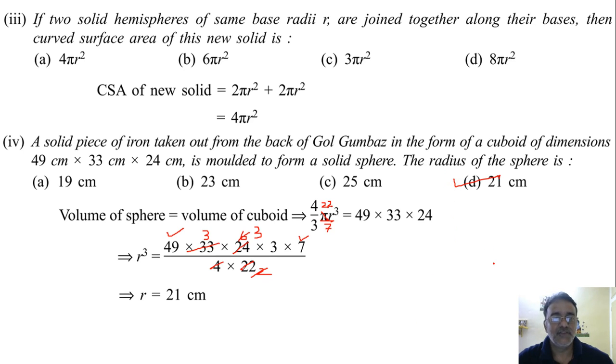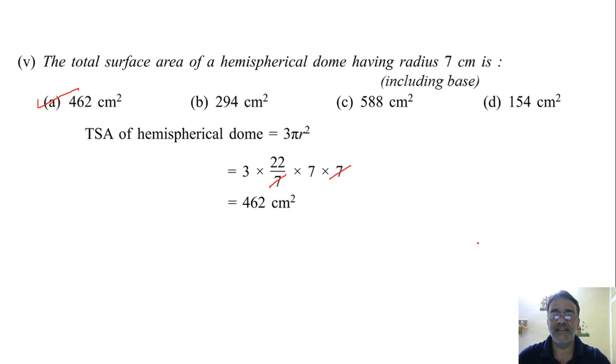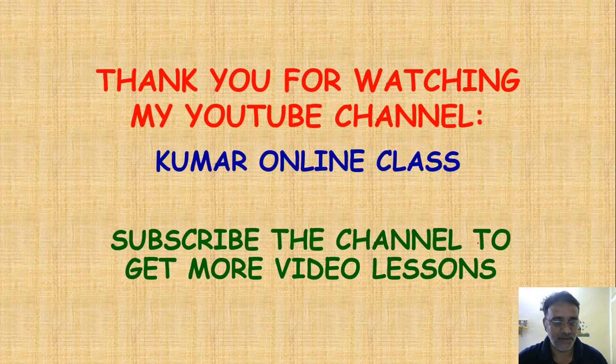That is 21 very good so we got the radius 21 centimeter so which option is the correct one D David right. So now we'll move toward the last bit the total surface area of a hemispherical dome having radius 7 centimeter is including base 3 pi r square yes very good 3 pi r square. Now we'll substitute here also the pi as 22 by 7 because the value of pi is not mentioned so 7 7 cancel and 22 into 21 that is 462 so which option is the correct one A A option okay. So any doubt in this case study question no sir okay so now we'll move towards we'll see the next case study question in the next one okay so thank you thank you very much.